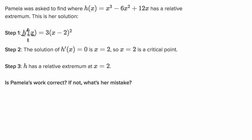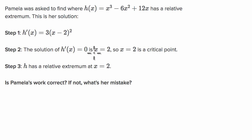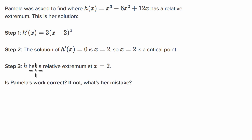In step one, it looks like she tried to take the derivative. In step two, she tries to find where the derivative is equal to zero, and she found that it happens at x equals two, so she says that's a critical point. And in step three, she makes a conclusion that therefore h has a relative extremum there.